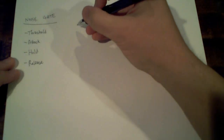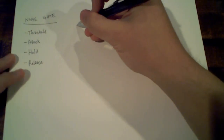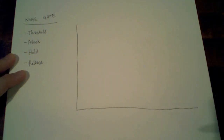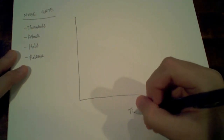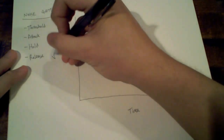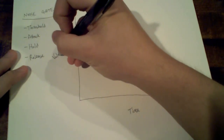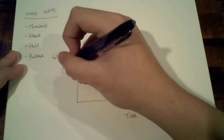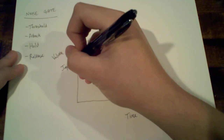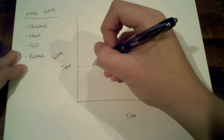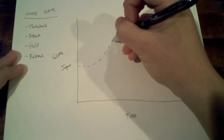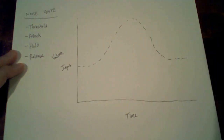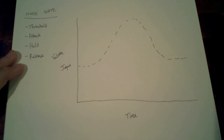To help you better understand this, I'm going to draw a graph because it is much easier to visualize it than just to hear it explained. Down here we have time, and over here we have volume. Then we are going to have an input signal, represented by this dotted line. For this example, we are going to use the background music to give you an idea of what this sounds like.